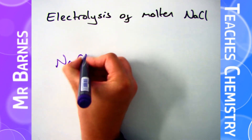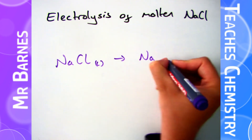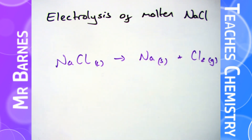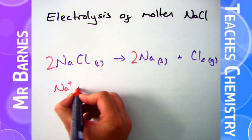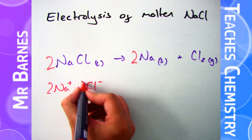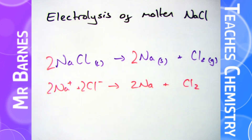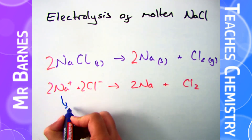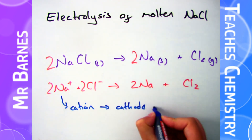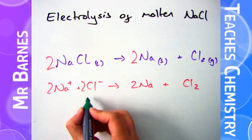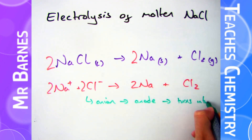Let's have a look at an example: the electrolysis of molten sodium chloride. In there I only have sodium and chlorine. When I do the electrolysis, it will form sodium and chlorine — remembering chlorine is diatomic so it goes around in pairs. You can see the balanced symbol equation here. Sodium chloride, being a liquid, splits into Na⁺ and Cl⁻. Sodium, the cation, is positive and goes to the negative cathode, turning back into sodium metal. Chlorine, the anion, goes to the positive anode and turns back into chlorine gas.